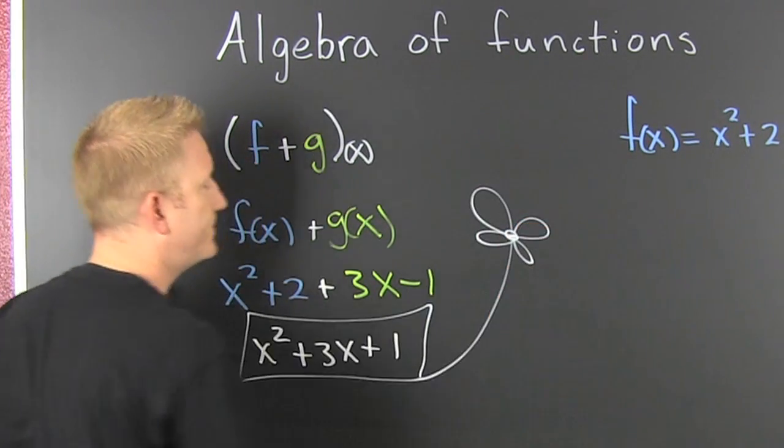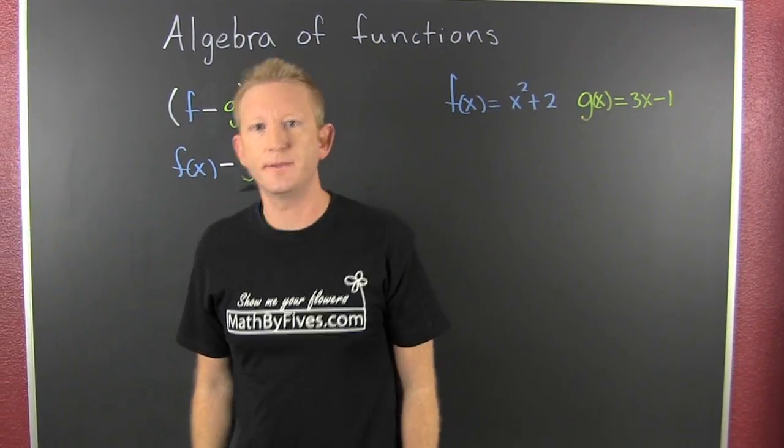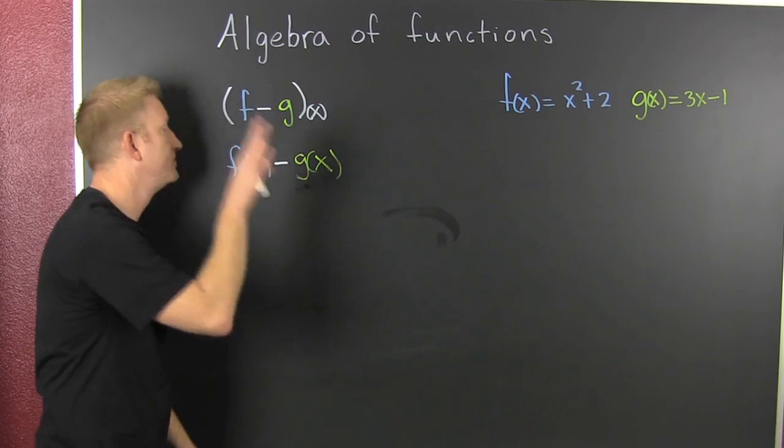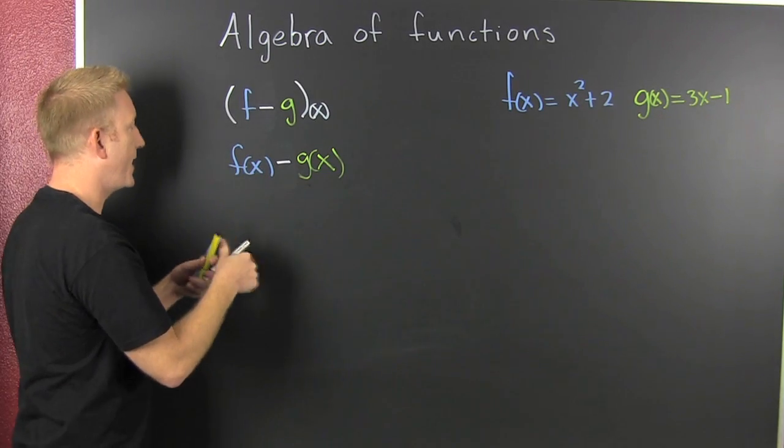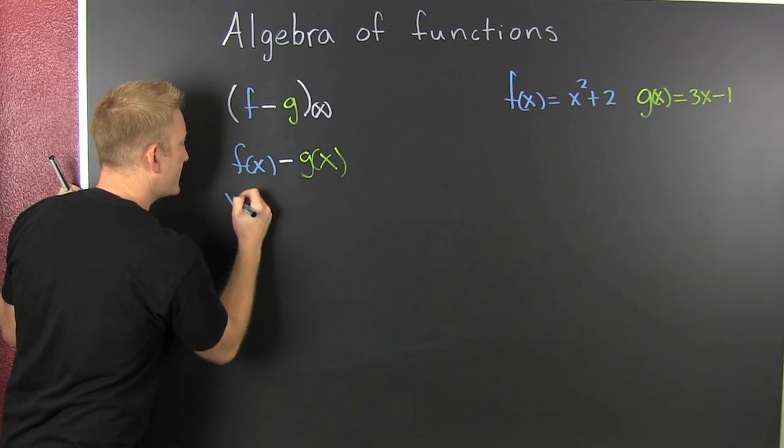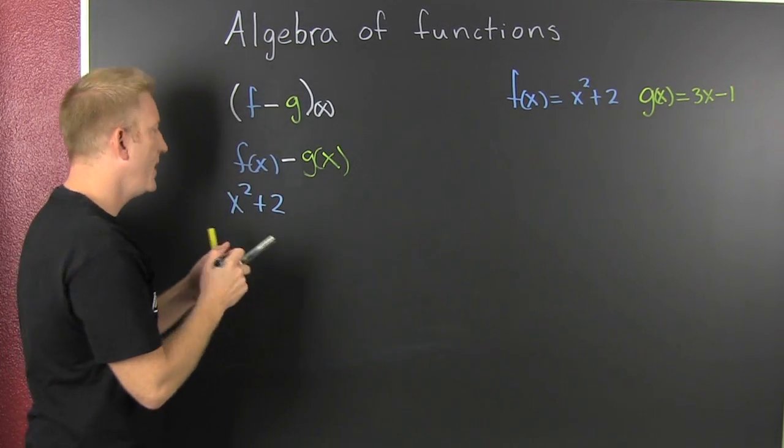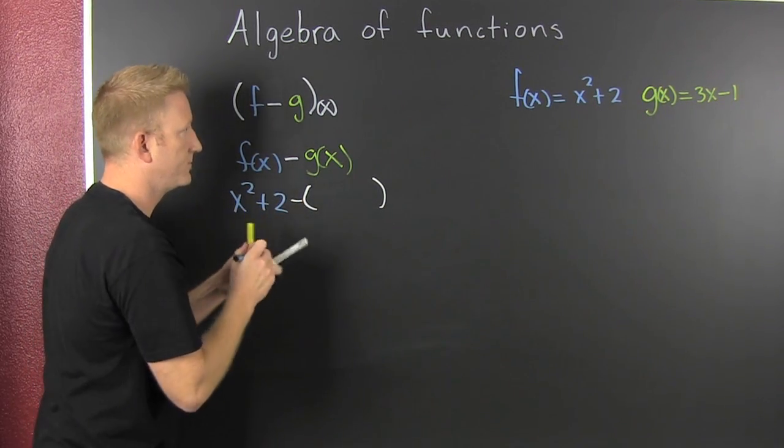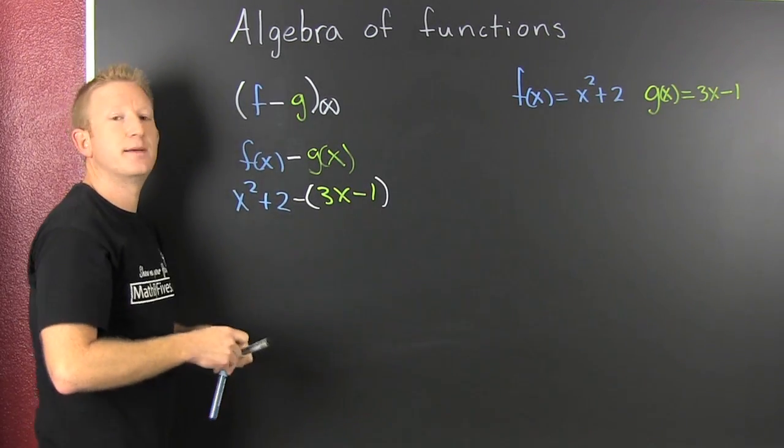I wonder what's gonna happen when we subtract them. Same trick, same ponies, this time subtract them. That's my notation for subtraction. This says take f and subtract g off it. So let's go. Everywhere we see f(x), I'm now gonna put x² + 2, because that was my f. And then in parentheses, I'm gonna put g's, and that's a 3x - 1.